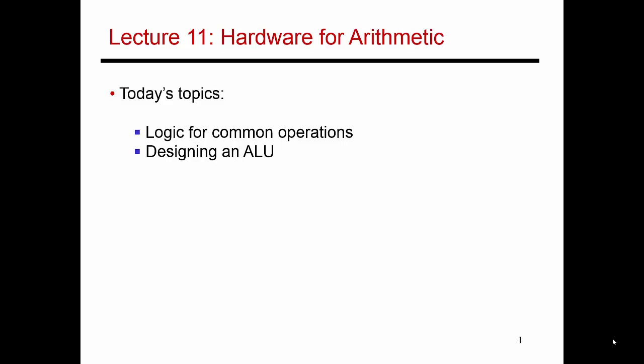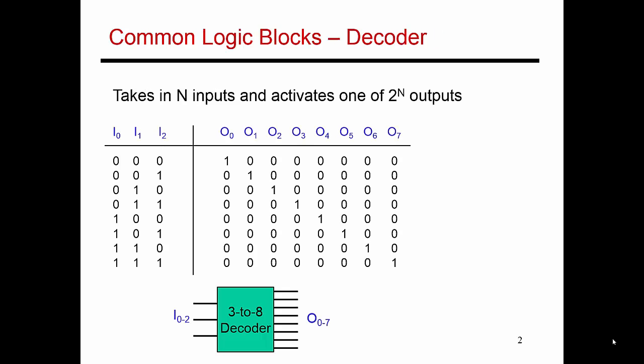Having discussed the basic gates and the basic laws of Boolean algebra, let's now look at a few common logic blocks that you'll frequently see in microprocessors. Let's start by looking at what is described as a decoder.